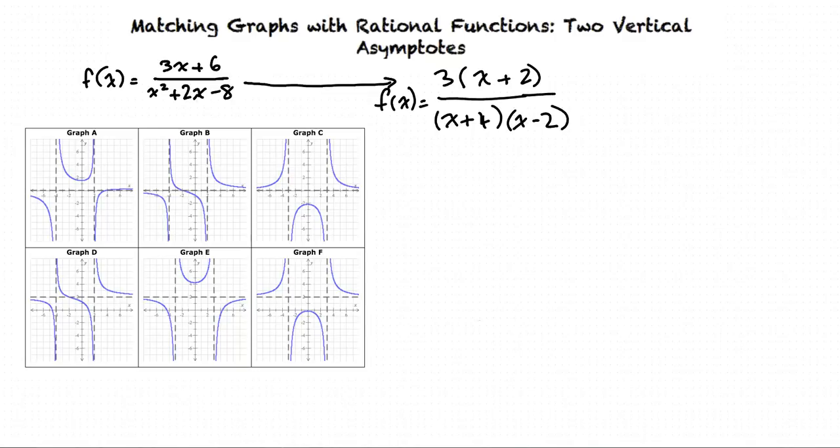At the points where the denominator equals zero, there will be vertical asymptotes, because those are places where the function does not exist. We can see from our denominator that there is a vertical asymptote at x = -4 and x = 2, because the denominator equals zero at these points.